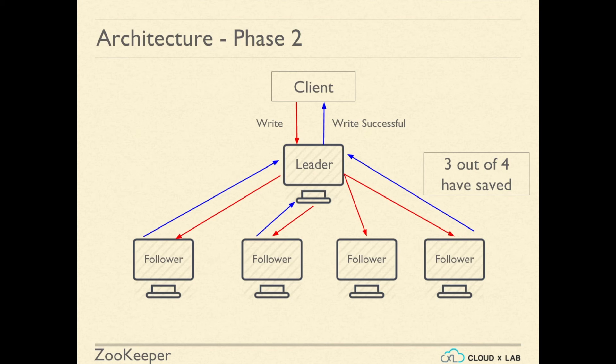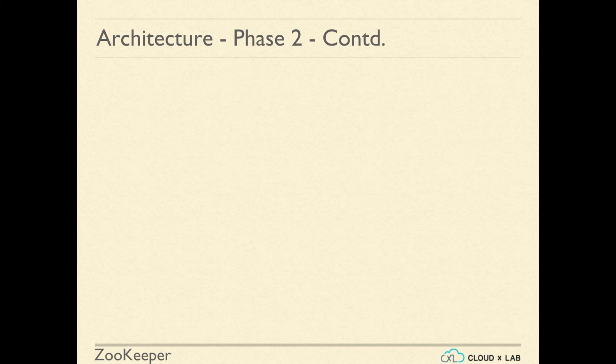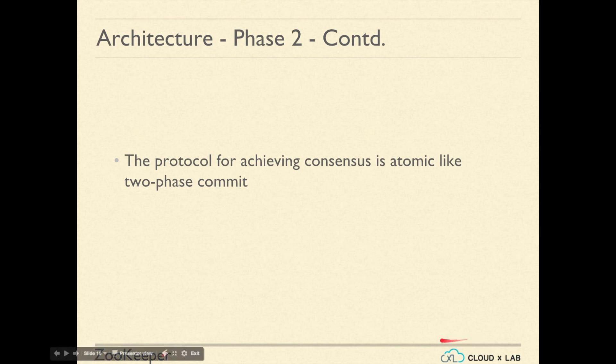The protocol for achieving consensus is atomic, similar to two-phase commits. Also, to ensure the durability of change, the machines write to the disk before the memory.